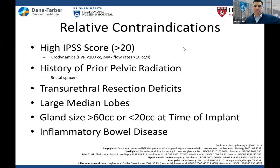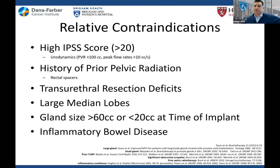Gland size has always been interesting — we've said greater than 60 cc causes pubic arch interference, and less than 20 cc leaves few places to put seeds, but really it's your comfort level. You can implant much bigger and smaller prostates. I just finished a 7 cc implant last week. A problem we're facing now is that a lot of folks getting combined modality therapy — after hormonal therapy, a normal 30–40 cc prostate can become 20 cc pretty quickly.